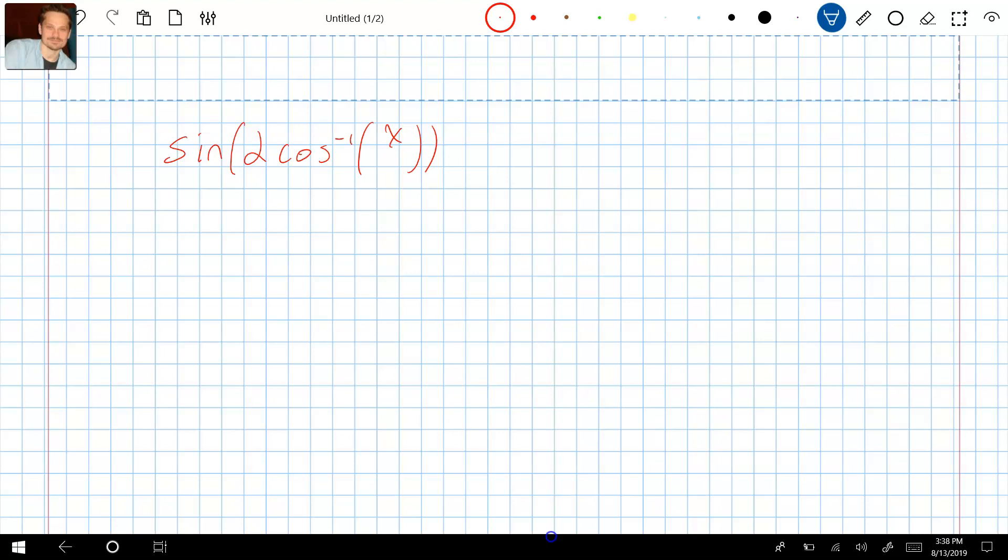So the first step is to realize that when you say cosine inverse of x, it's really x over 1. That's important to see because based on this we can make a triangle that will really help us reason our way through simplifying this expression so it's only in terms of x and no sines or cosines.